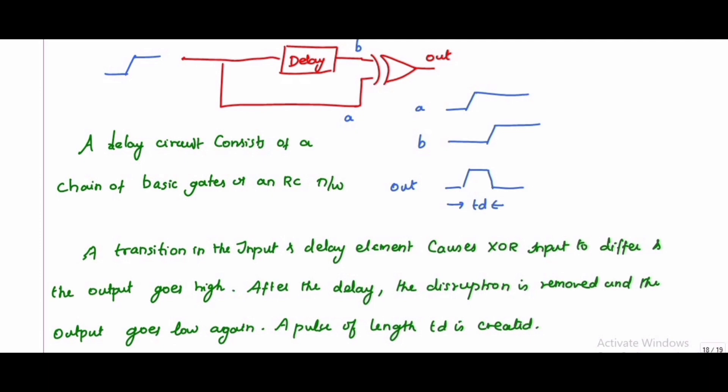There is a transition in the input and the delay element causes the XOR gate inputs to differ, and the output goes high. If you see a and b, they differ by the time period td. During that time period, you will get the output as one, which forms a pulse of length td. After this delay, the disruption is removed and the output goes low again, based on the input transition and the delay element.